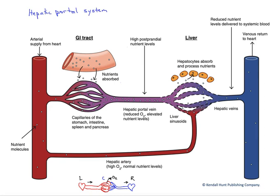In this figure, we're going to examine the hepatic portal system, which is one of a very small handful of portal systems found in the human body. Before we do so, let's look at typical systemic circulation so that we can compare it to this atypical portal system.